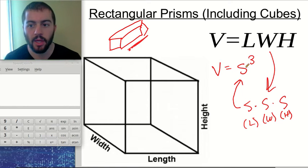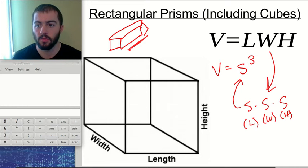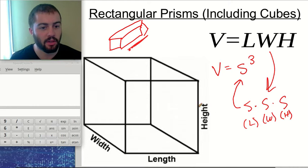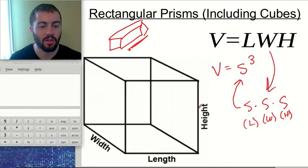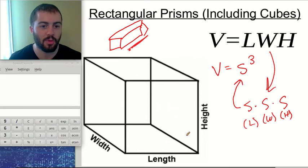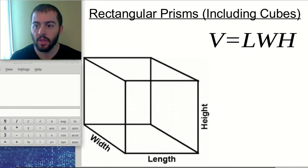Length times width times height is what we're going to use for rectangular prisms. It doesn't particularly matter which side you make the width, the length, and the height. As long as you keep it straight in your head, you could make the height go sideways — just whatever you want as long as you keep it straight.